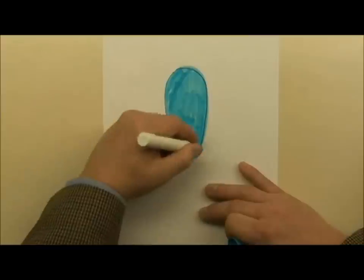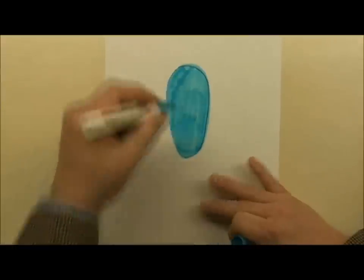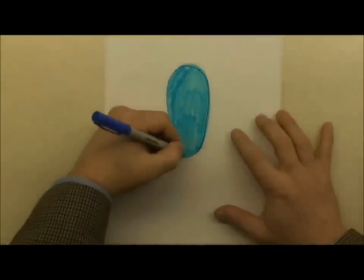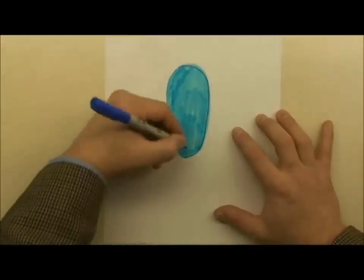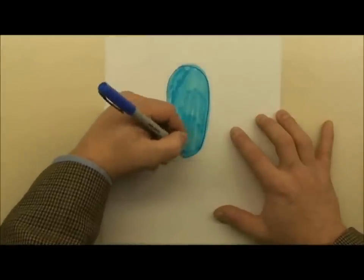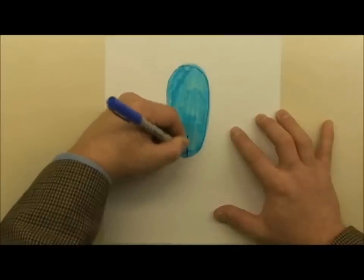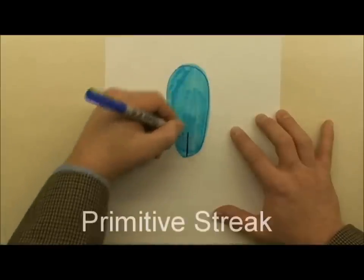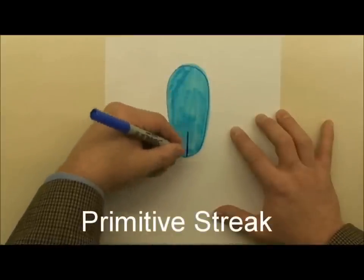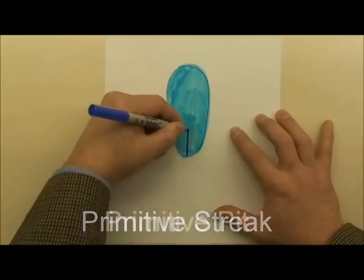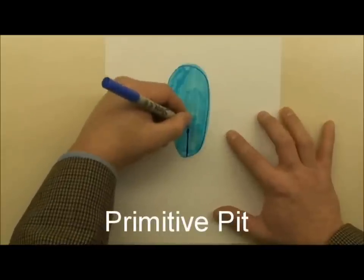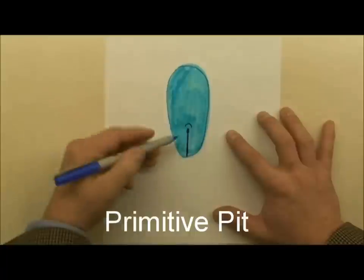Now what happens next is this process called gastrulation. A lot of developmental biologists joke that this is the most important thing that ever happens to you in your life because we go from a sheet to a series of three cell layers and then into a series of tubes that form our actual mature body. And the first thing that happens is a little strip appears on the caudal end or the tail end of the developing embryo called the primitive streak. And at the very tip of that is an area called the primitive pit and an important signaling area just ahead of that called the primitive node.